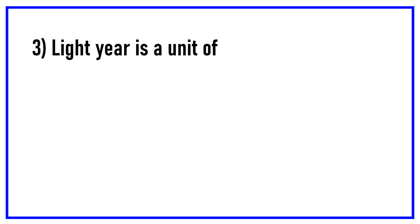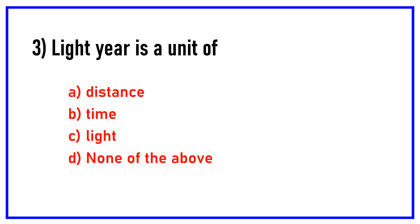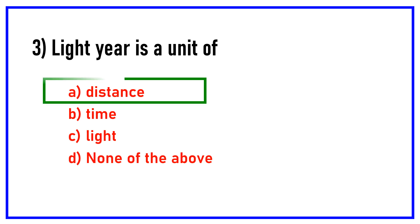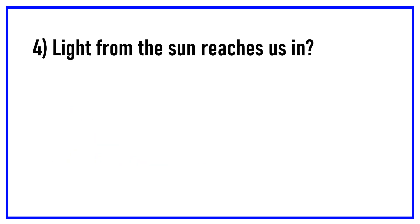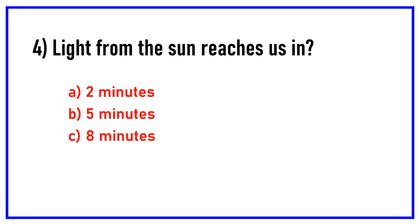Light year is a unit of. Options are: distance, time, light, none of the above. Light from the sun reaches us in. Options are: 2 minutes, 5 minutes, 8 minutes, 18 minutes. Answer: 8 minutes.